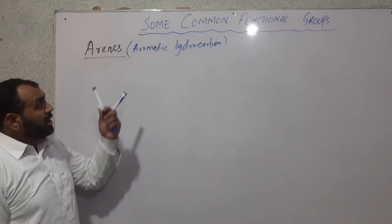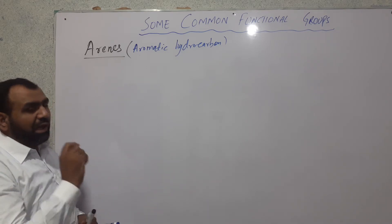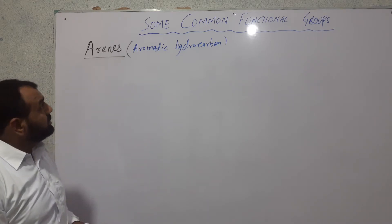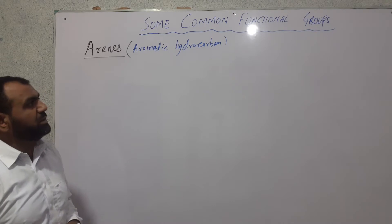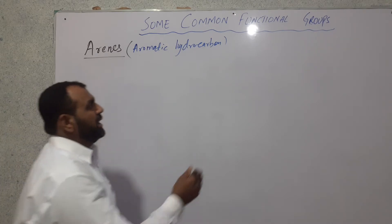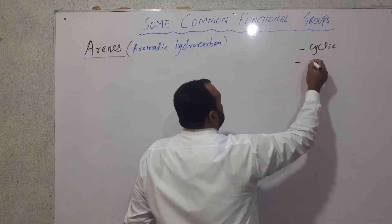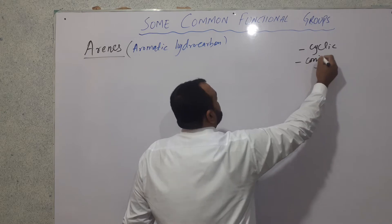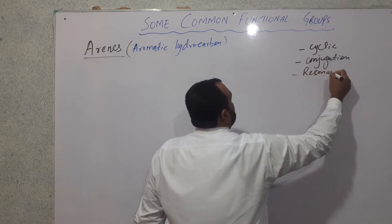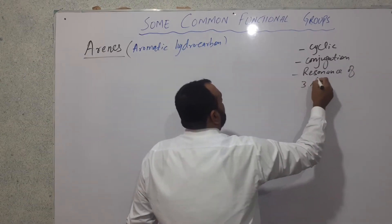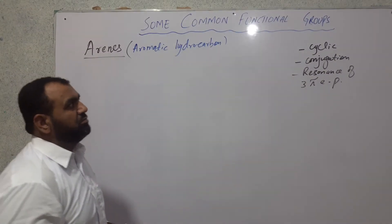In a previous video we discussed the classification of hydrocarbons, which can be open chain or closed chain. Closed chain or cyclic hydrocarbons are of two types: alicyclic or aromatic. Aromaticity indicates the presence of aromatic hydrocarbons. To explain aromaticity we must have three conditions: number one, the compound should be cyclic; number two, it must have conjugation; and number three, it must have resonance of three pi electron pairs.